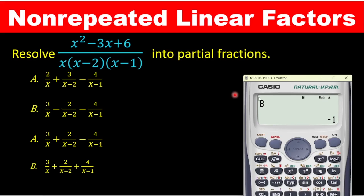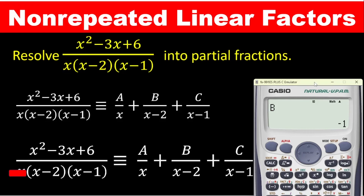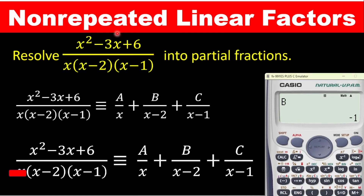This is the second question: resolve x squared minus 3x plus 6, divided by x, bracket x minus 2, bracket x minus 1. We are resolving this into partial fractions and we can solve it using the calculator. The first thing is to resolve the expression into its partial fraction. Looking at the denominator, we have x, parenthesis x minus 2, and x minus 1 — these are all linear factors.